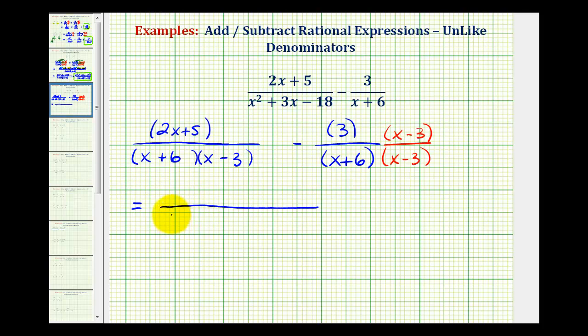We'll write this as a single fraction where our denominator is the quantity x plus 6 times the quantity x minus 3. And then we'll combine our numerators. So we have the quantity 2x plus 5 minus, let's go ahead and multiply these, so we have minus 3x minus 9. Remember here we just distributed the 3.